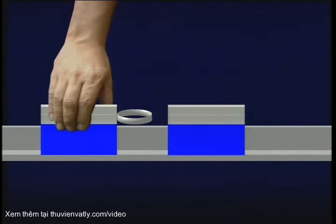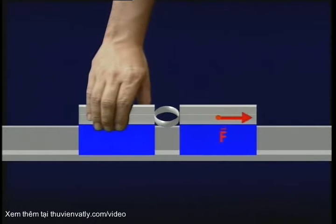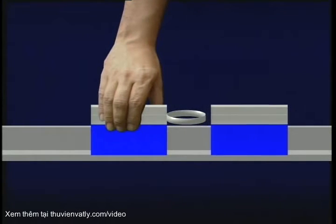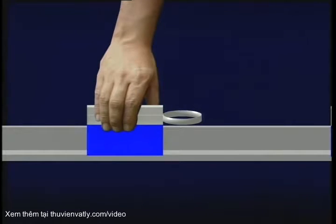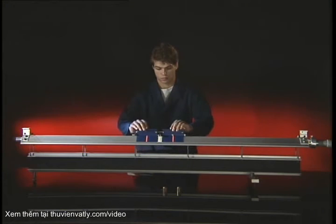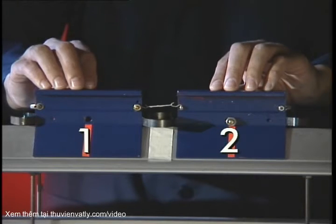If one object pushes on a second object, the second object accelerates. But what about the object doing the pushing? Does it also accelerate? We will use gliders floating on an air track to find out.